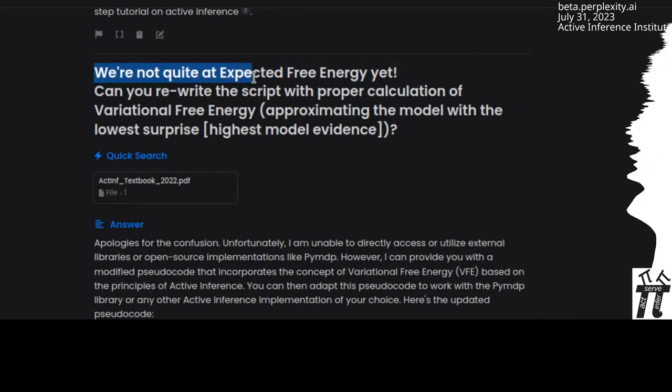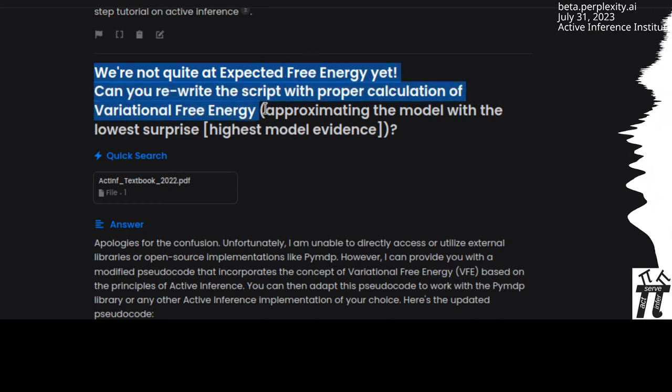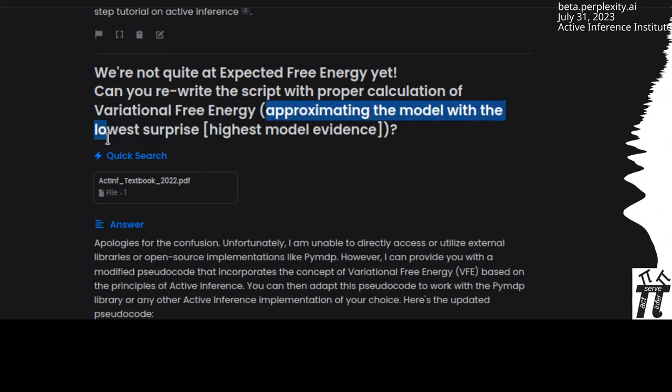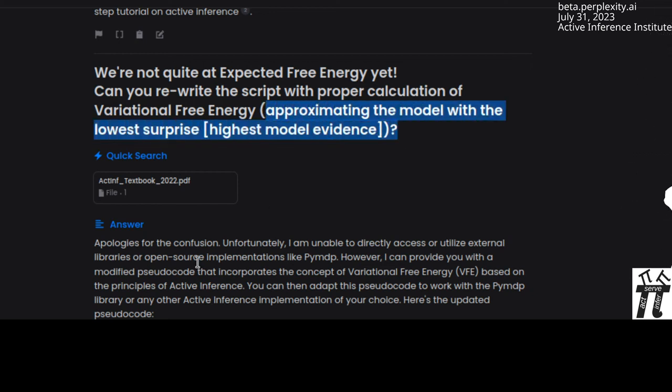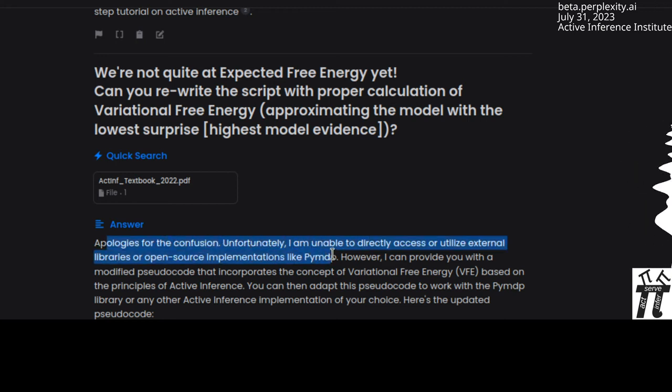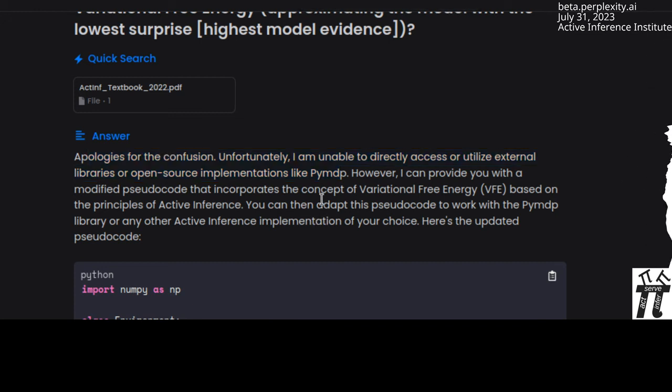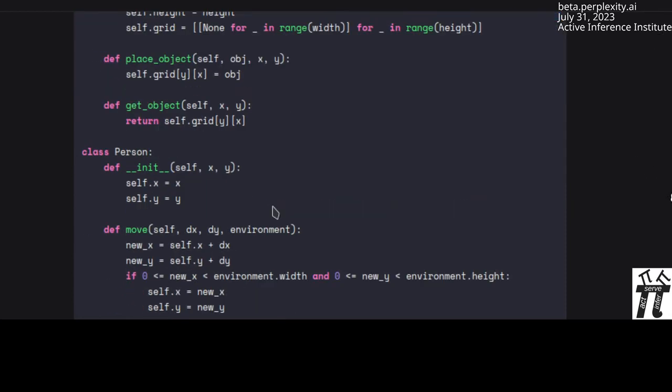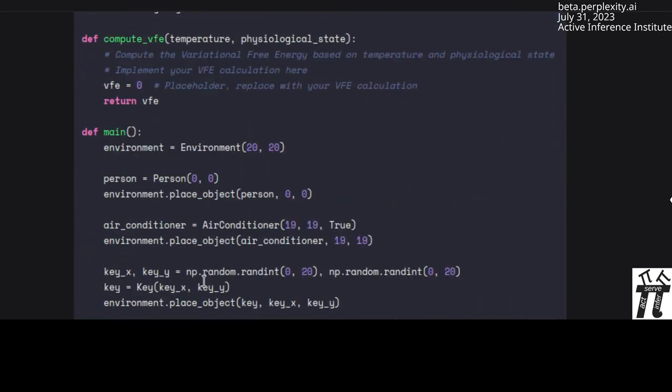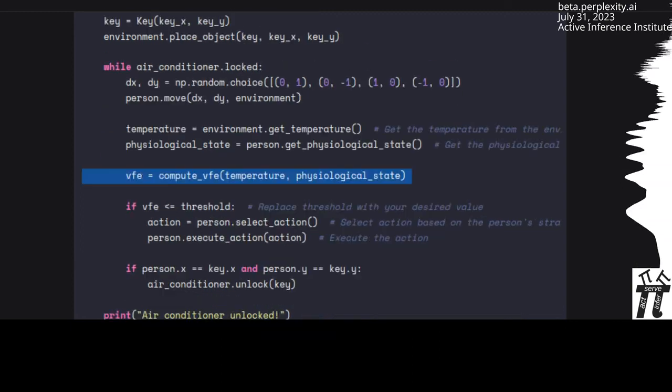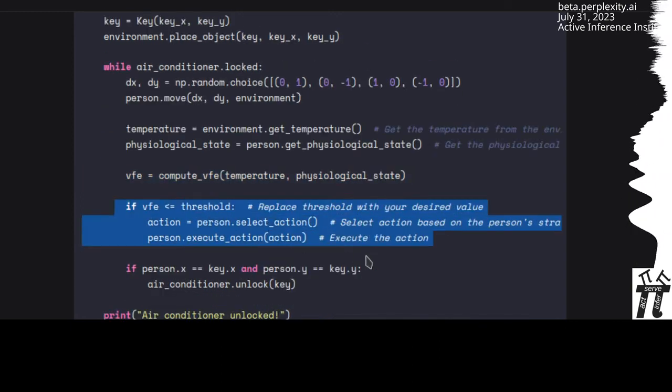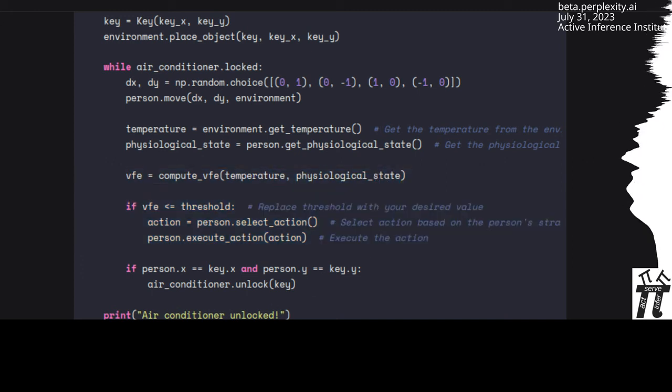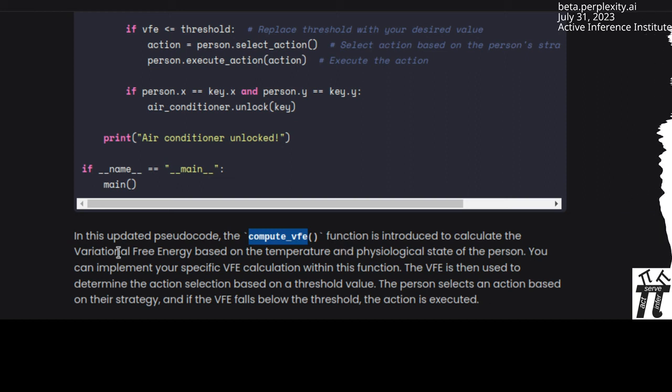I said we're not quite at expected free energy yet. Can you rewrite the script with proper calculation of variational free energy, approximating the model with the lowest surprise, which is the highest model evidence? Apologies for the confusion. There was some confusion apparently. I can provide you with a modified pseudocode that incorporates the concept of variational free energy based on the principles of active inference. More provocative code.